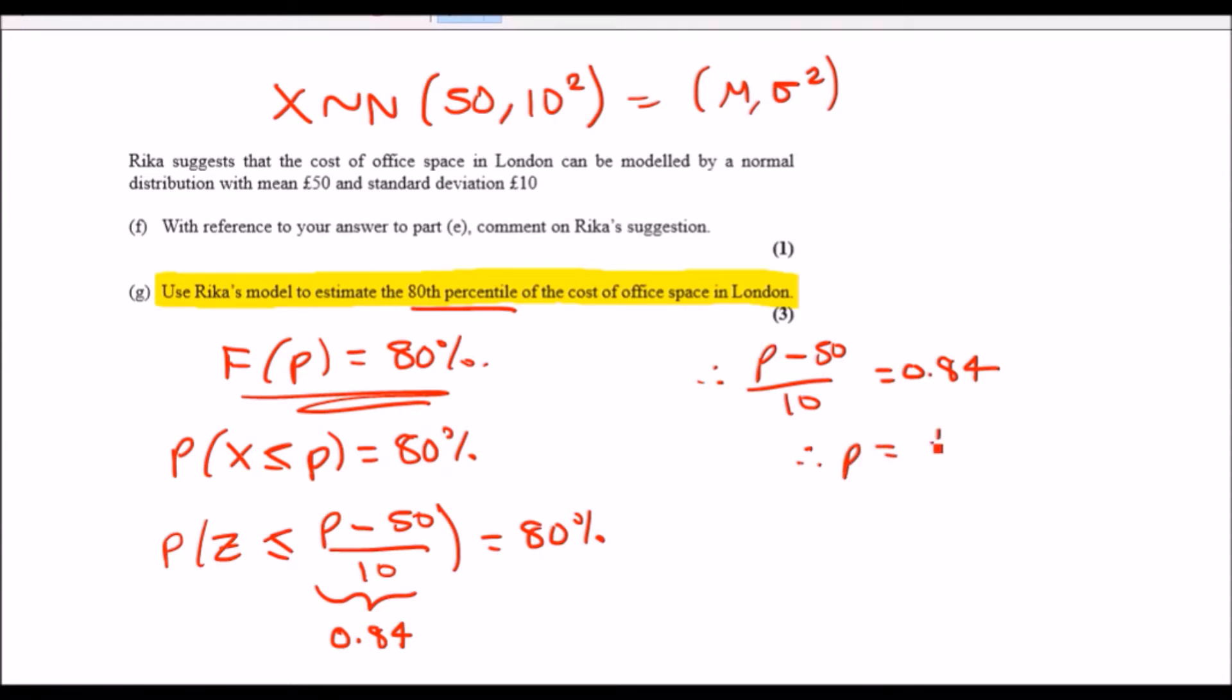So about 58 pounds 40 pence, to three significant figures. So this represents the 80th percentile, which is ahead of the mean.